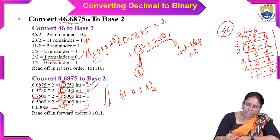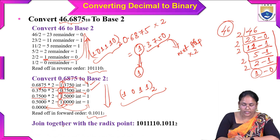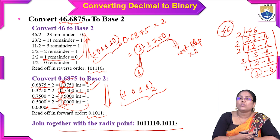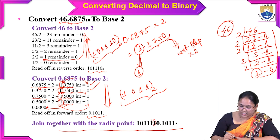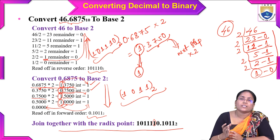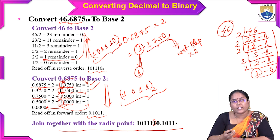Combining both parts with a radix point: the integer part 46 = 101110 in binary, and the fractional part 0.6875 = .1011 in binary. Joining them together gives the binary representation of 46.6875 as 101110.1011 to base 2. The most widely accepted and used method to convert decimal numbers — whether integer or floating point — to binary, octal, or hexadecimal is the repeated division (and multiplication for fractions) method.